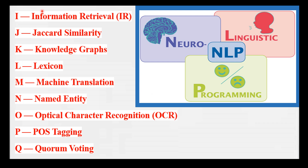J is for Jaccard Similarity — a measure of similarity between two sets. It compares the size of the intersection and the size of the union of the sets, and is commonly used in NLP for text similarity by comparing the overlap between two sets of words. For example, two articles about the same topic have high Jaccard similarity as they share many common words. The formula is: intersection of words divided by union of words.